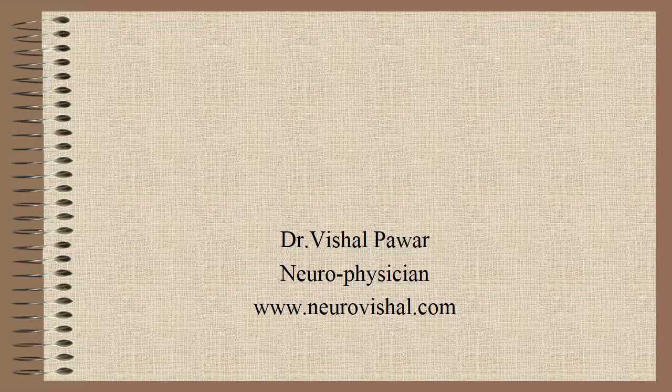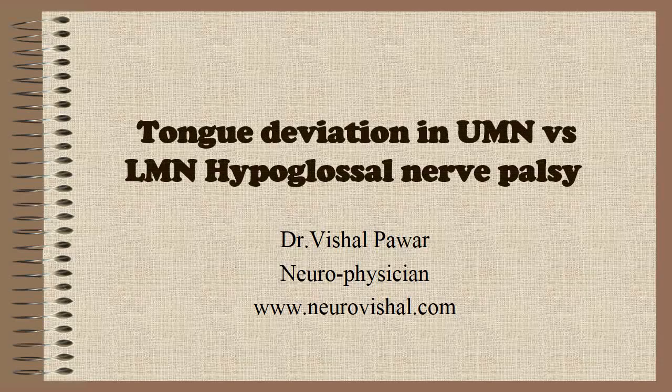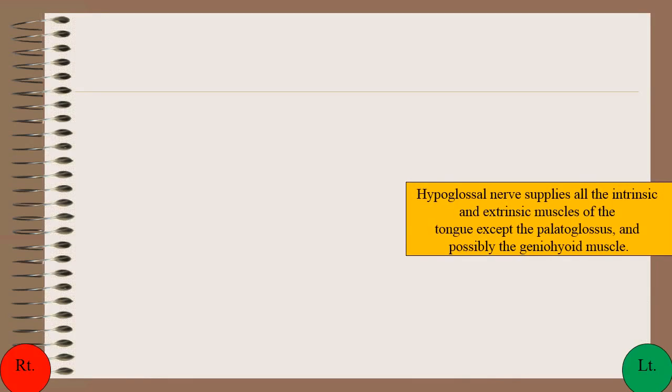In this video, I am going to discuss Tongue Deviation in Upper Motor Neuron vs. Lower Motor Neuron Hypoglossal Nerve Palsy. The hypoglossal nerve supplies all the intrinsic and extrinsic muscles of the tongue except the palatoglossus and possibly the geniohyoid muscle.